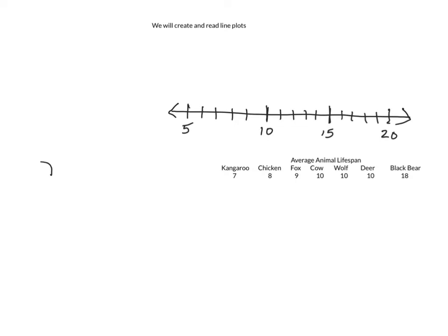Now I'm going to enter my data. So kangaroo is 7, so I'm going to go 5, 6, 7. I'm going to put one X here. Chicken is 8. There is 8. I'm going to put an X there. And I'm going to try to keep them the same size.